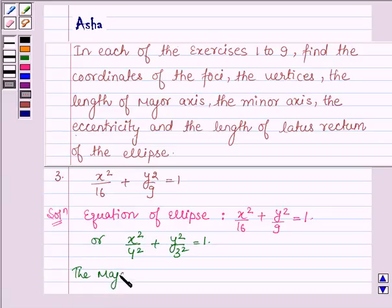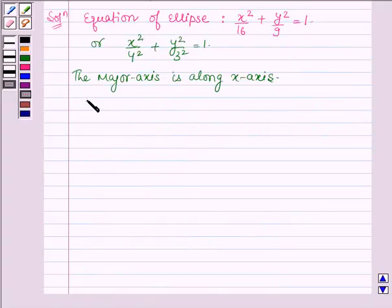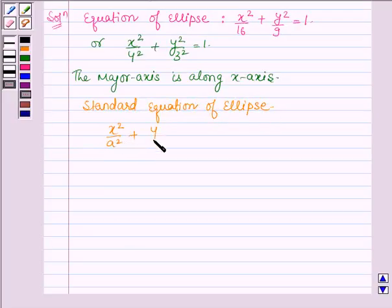Thus, the major axis is along the x axis. And from question number 1, we know that the standard equation of the ellipse whose major axis is along the x axis is given by x square upon a square plus y square upon b square is equal to 1.